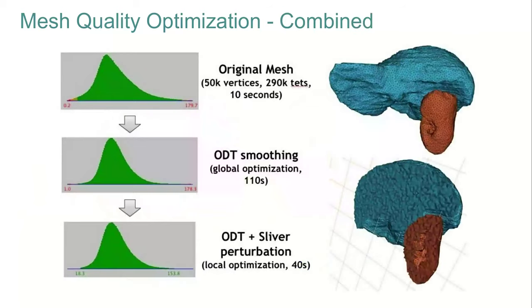When both the exuder and perturber are combined, you can see in this example that the minimum angle is increased while the maximum angle is decreased, and the deviation of the distribution of angles is also reduced.